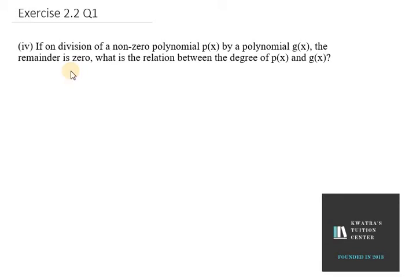Hello everyone, let's start with question number 1, part 4. It says: if on division of a non-zero polynomial P(x) by a polynomial G(x), the remainder is 0, so in this case, the remainder is 0.